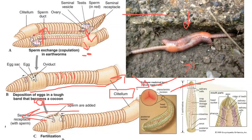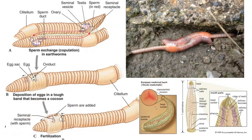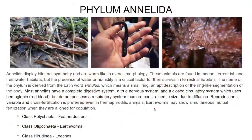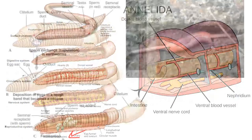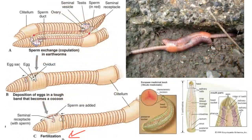This is an image of another type of segmented worm — a parasitic segmented worm: leeches. We have earthworms, feather duster worms, and leeches. Leeches are parasitic — they have hooks in their head, which allow them to attach to their host and drink their blood. Segmented worms are cool.